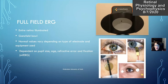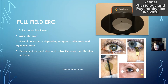With full field ERG, the whole retina is illuminated. The patient looks at a Ganzfeld bowl — this is one example of what that looks like. Most of us don't have much experience with how these tests are actually done in the lab. Different electrodes are used, most of the time placed on the cornea to get the best results, but sometimes the skin can be used, though the amplitude tends to be a little bit lower.